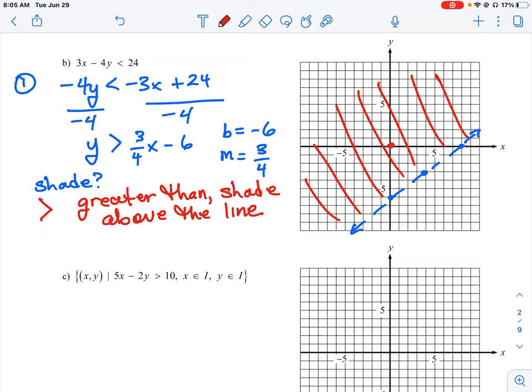But if we pick a test point, we can use the origin zero zero again. So then I will put in my value for y. So this means y is greater than three quarters times zero minus six, which means we have an expression here that says zero is greater than negative six. So again, is that a true or a false statement?